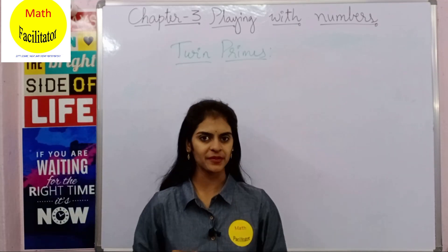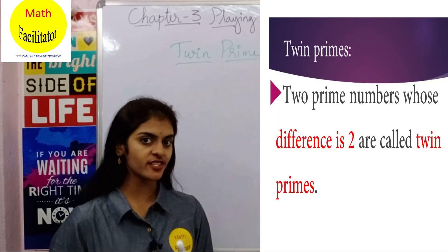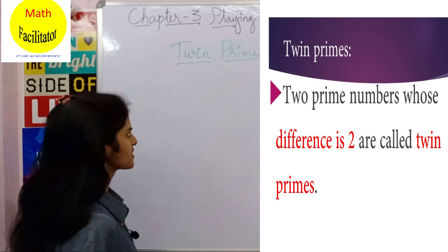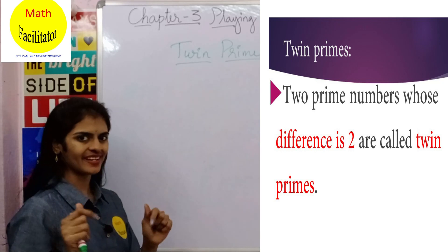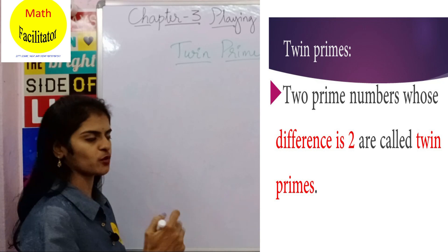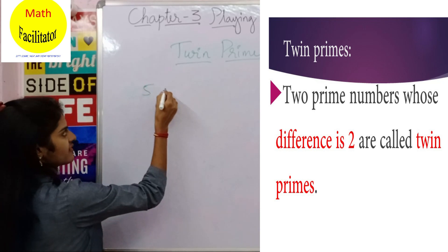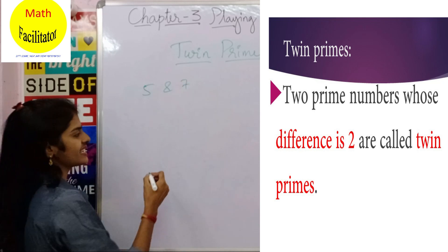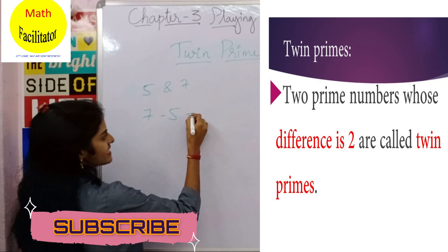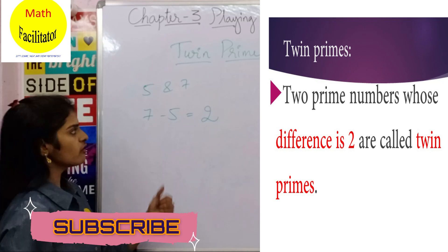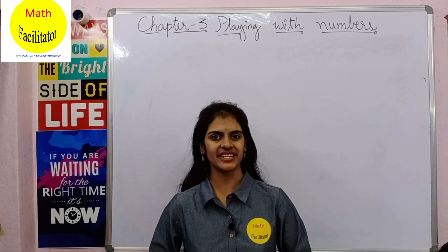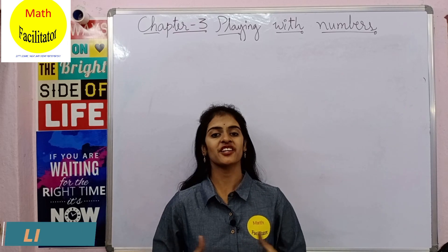What are twin primes? Two prime numbers whose difference is 2 are called twin primes. For example, 5 and 7 are both prime numbers, and 7 minus 5 equals 2. So 5 and 7 are twin primes. This brings us to the end of this video.